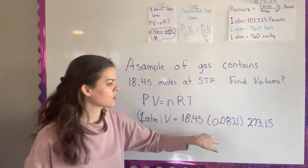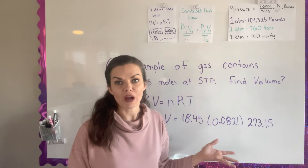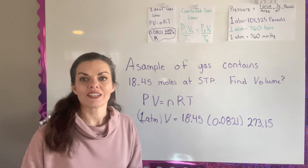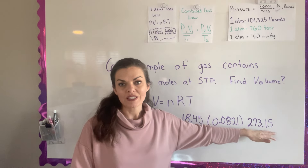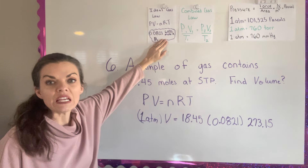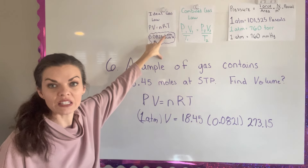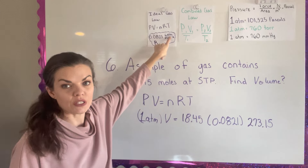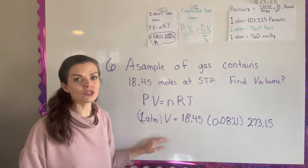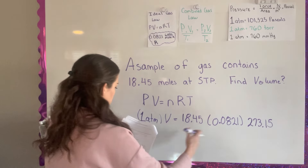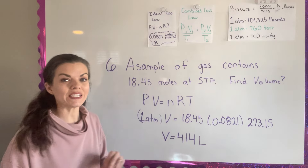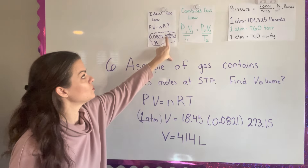They give me the number of moles in the problem. R is a constant, and for temperature, it's at STP which is zero degrees Celsius, but gas laws always use Kelvins, so we convert: zero degrees Celsius is 273.15 K. The R constant tells you the units — volume in liters, pressure in atmospheres, temperature in Kelvin. Solving for V gives 414 liters — I know it's liters because the unit for R is liters.